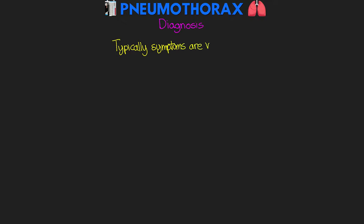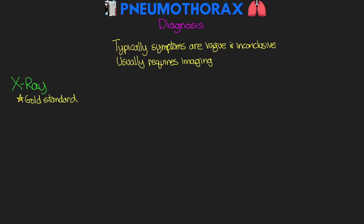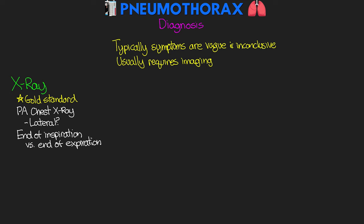Let's talk about some of the ways that we can diagnose a pneumothorax. Typically the symptoms are often vague and inconclusive, especially for patients that have small primary ones — they may even be asymptomatic — so usually we're going to require some sort of imaging. The first is our x-ray, which is really our gold standard and something quick and easy to do. We're going to be doing a posterior-anterior or PA chest x-ray as our primary view. If we don't observe one on a PA x-ray but are still suspecting pneumothorax, we can get a lateral view as well. X-rays are usually obtained at the peak of inspiration, but an x-ray at the end of expiration may also be helpful because the lungs will be smaller and more compressed, showing up wider, and we may actually be able to visualize the air easier.